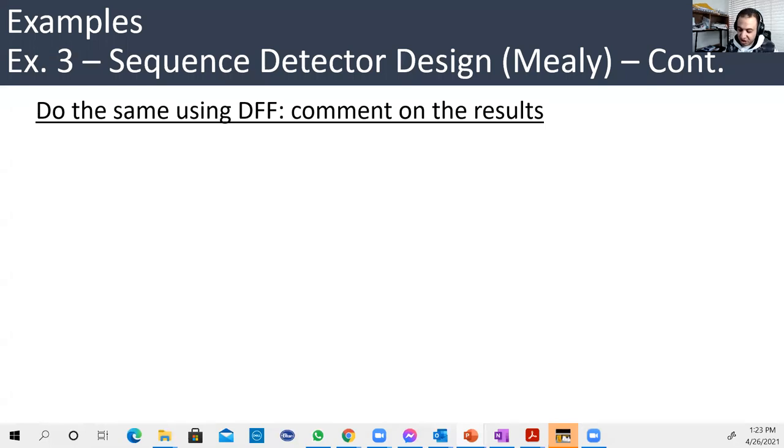Hello guys, welcome back to our lecture 20. So in this lecture, we're going to solve the same example that we solved last time, which is a sequence detector that detects two or more ones in a sequence, but now using the D flip-flop. And why is this? I'm going to show you that the type of flip-flop might affect the complexity of the final output.